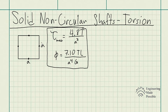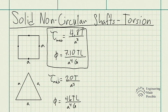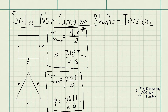Now let's do one for the equilateral triangle. The maximum shear stress this shaft would experience is 20 times the torque divided by A cubed. And the angle of twist is 46 times the torque times the length of the shaft divided by A to the power of 4, divided by the shear modulus. These are the locations where the maximum shear stress would be experienced.